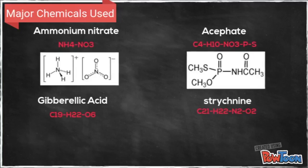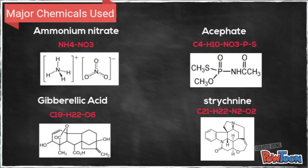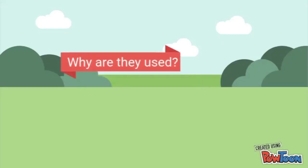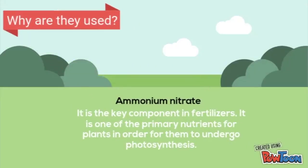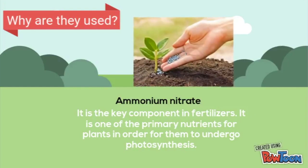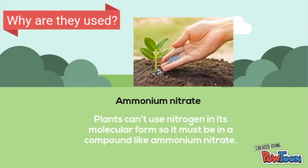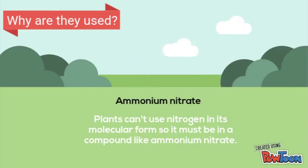These are the formulas and these are the chemical structures. So ammonium nitrate is the key component in fertilizers. It is one of the primary nutrients for plants in order for them to undergo photosynthesis. Plants can't use nitrogen in its molecular form, so it must be in a compound like ammonium nitrate.